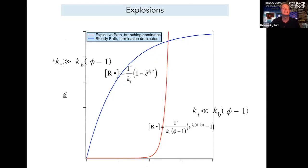If termination dominates, then a nice, smooth saturation curve is found. The concentration of radicals does not go out of control, and a steady, homogeneous reaction is observed instead.